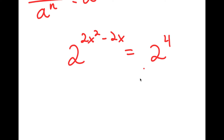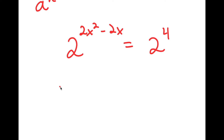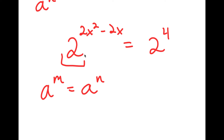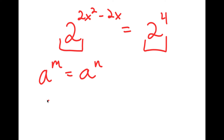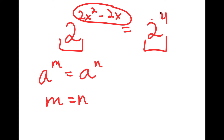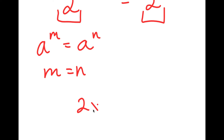My final property is that if I have something in the form a to the power of m is equal to a to the power of n — as seen here, because both my bases are the same — then this means that m is equal to n, or my exponents are equal to each other, meaning 2x squared minus 2x is equal to 4.